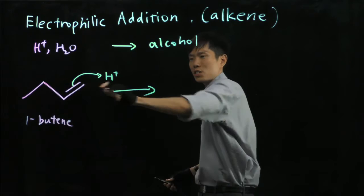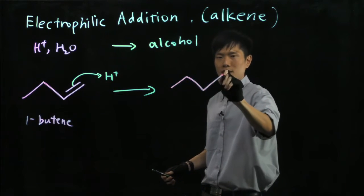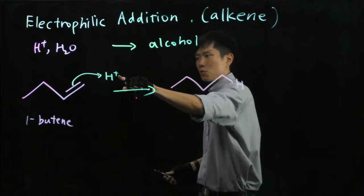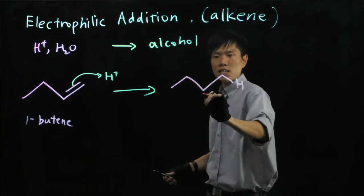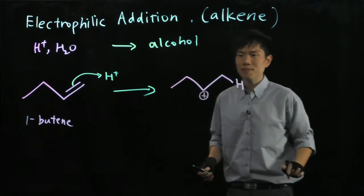So let's put this H here first. The positive charge will go to the next adjacent carbon. Right? You get this.